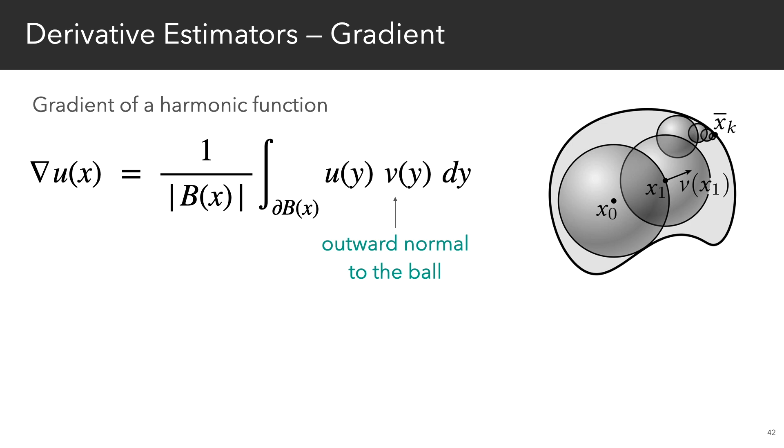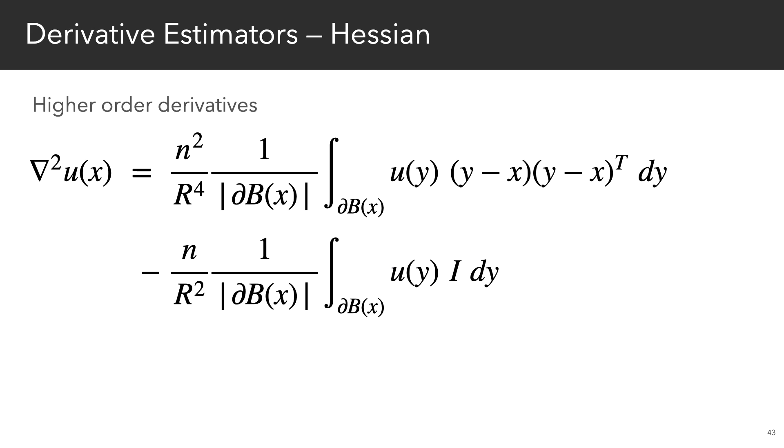Actually, computing the estimate of this expression is basically free with walk-on spheres, because the only additional thing you need to be able to do is to compute the normal at the first step of the walk. We can also compute second-order quantities such as Hessians, and we do this using tools from both potential theory and stochastic calculus.